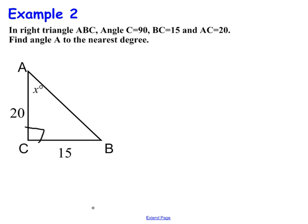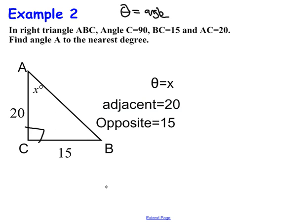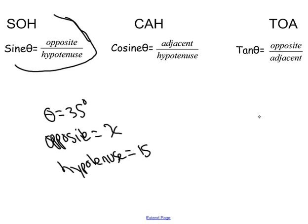So let's look at the information I have. This time, theta is X. Remember, theta stands for angle. It's a Greek letter that's used to denote the angle. So the angle is X. It's unknown. Now, that 20, in relation to the X, is it adjacent, opposite, or hypotenuse? It's adjacent, so adjacent is 20. That 15 is opposite, so the opposite side is 15. So let's go back to our trig ratios. We have adjacent, opposite, and theta. That's tangent. So for example 2, we're going to use tangent.